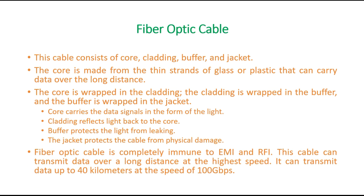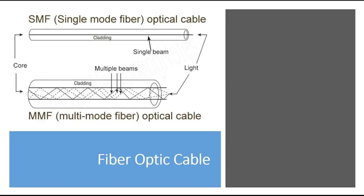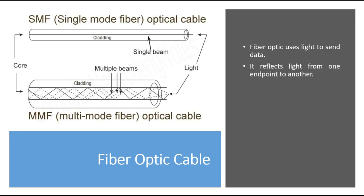Fiber optic cable is completely immune to EMI and RFI. It can transmit data over long distances at the highest speed — up to 40 kilometers at 100 Gbps. Fiber optics use light to send data, reflecting it from one endpoint to the other. Based on how many beams of light are transmitted at a given time, there are two types: single-mode and multi-mode fiber optic cable.